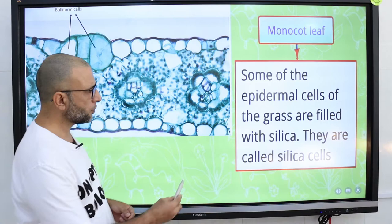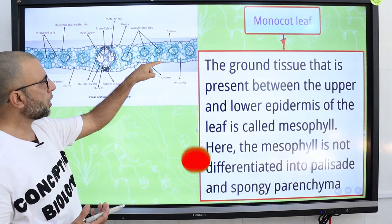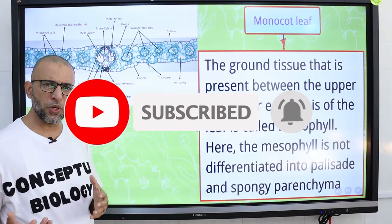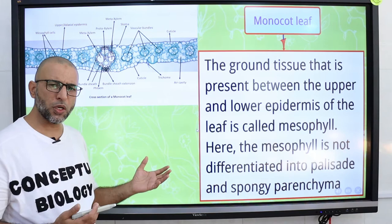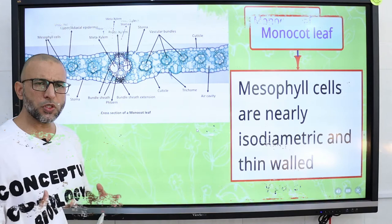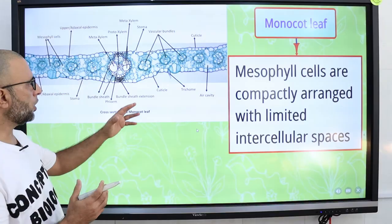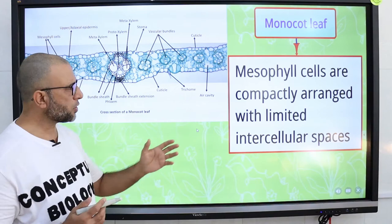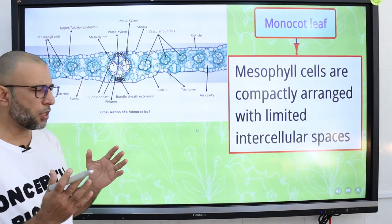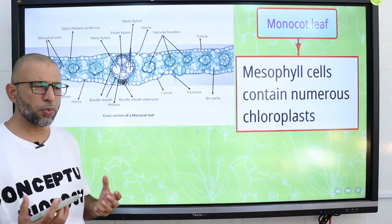The ground tissue present between the upper epidermis and lower epidermis is called mesophyll. Mesophyll cells in monocot are not differentiated into palisade mesophyll and spongy mesophyll, unlike in the dicot leaf. Mesophyll cells are nearly isodiametric — roughly spherical — and thin-walled, compactly arranged with limited intercellular spaces. They contain numerous chloroplasts and are photosynthetic in function.